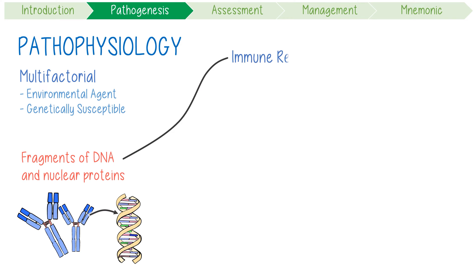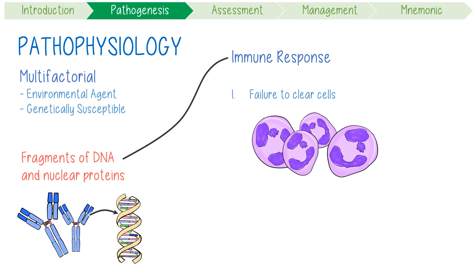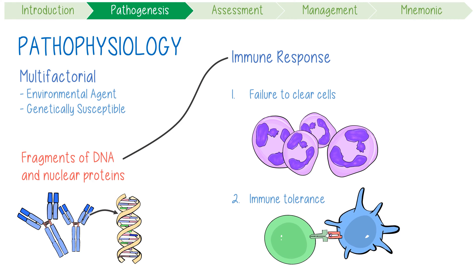This immune response probably starts from one or two things. One, a failure to rapidly clear cells through apoptosis, which usually presents exposure of nuclear antigens to the immune system. Or two, from an issue with the process of actually establishing immune tolerance to self.